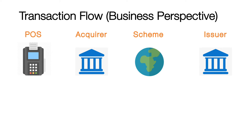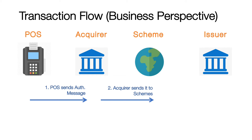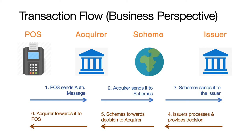Now let's look a bit more into the transaction authorization flow from a business perspective — it's also called the four-party model. When the customer does the transaction at the POS terminal, the POS sends a message to the acquirer. The acquirer does some basic processing and forwards the message to the scheme. The scheme forwards the transaction further to the issuer for decisioning. The issuer performs the decisioning and sends the decision to the scheme, which further forwards the response to the acquirer and then to the POS.